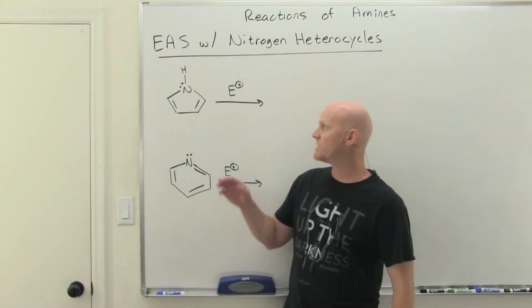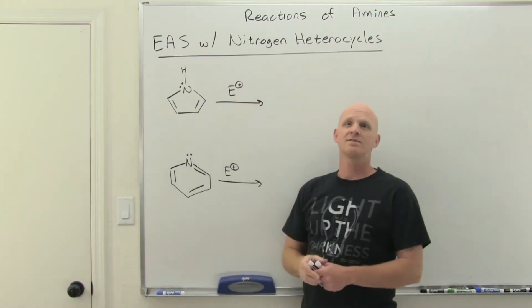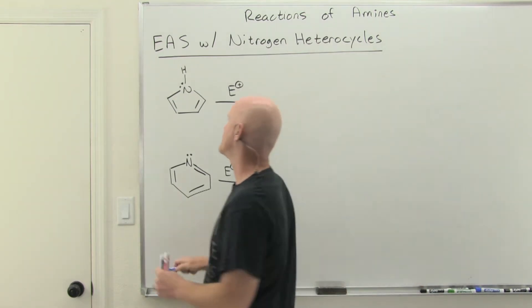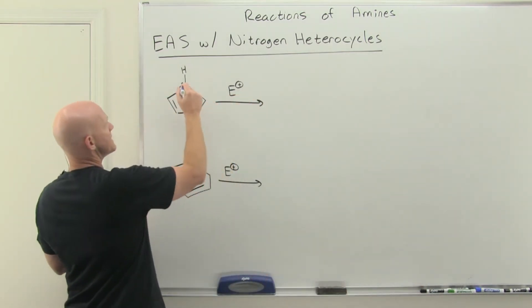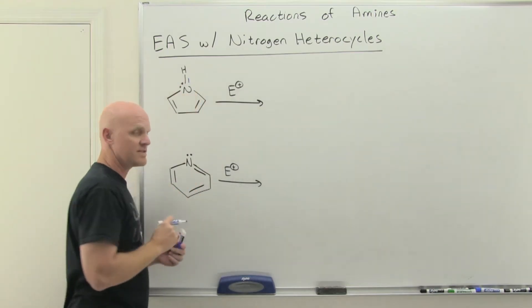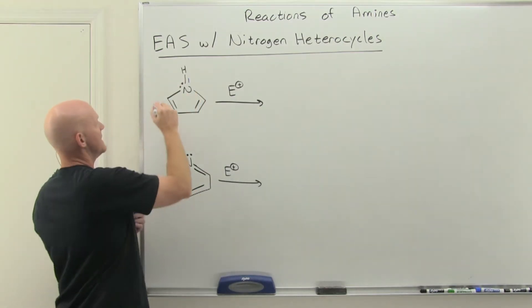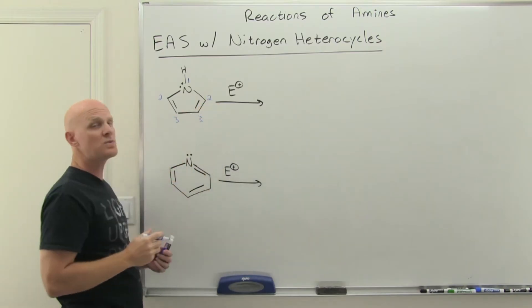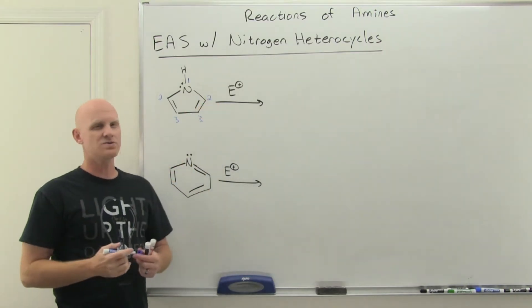Alright, so we're going to start with pyrrole here. And it turns out pyrrole here, we say that EAS happens at the two position. Well, what does that mean? Well, if we look at these nitrogen heterocycles, we always define the nitrogen as being at the one position. And so then either adjacent carbon is at the two position and then further down the chain, those would be the three positions.